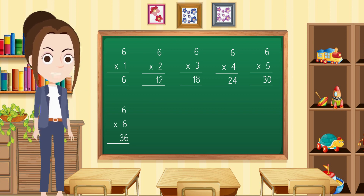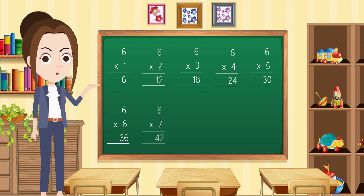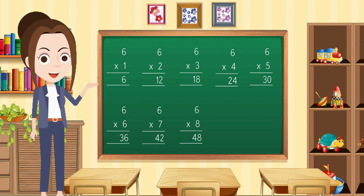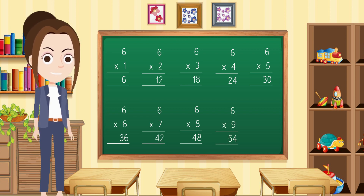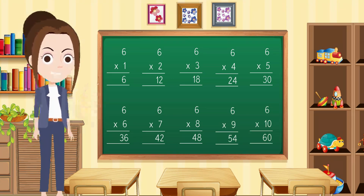6 × 6 = 36. 6 × 7 = 42. 6 × 8 = 48. 6 × 9 = 54. 6 × 10 = 60.